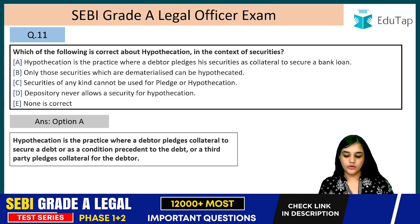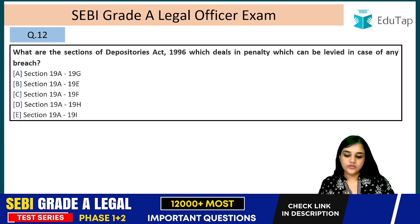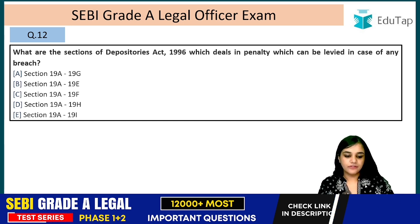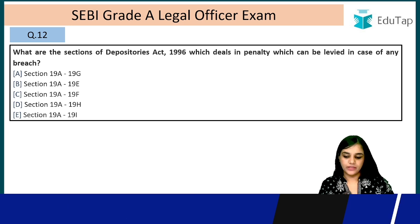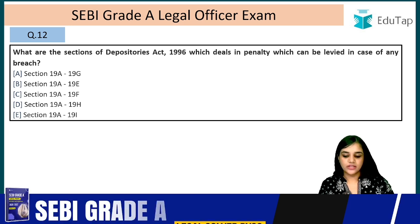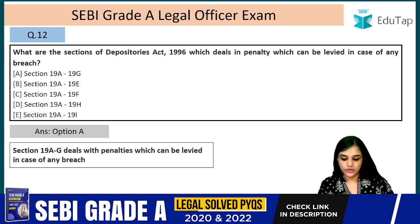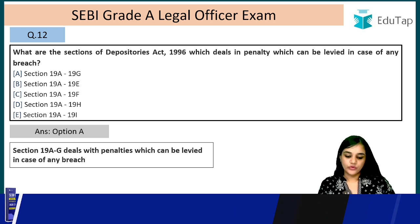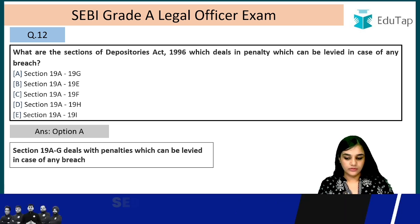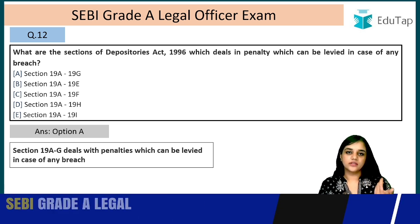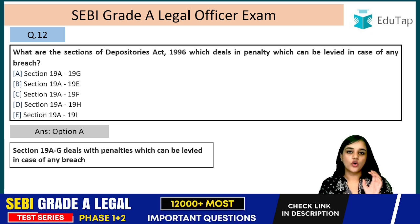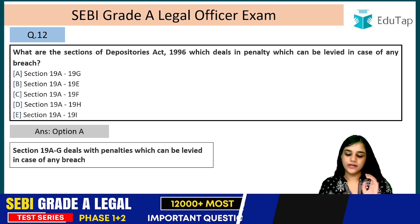Question 12: What are the sections of the Depositories Act 1996 which deal with penalties that can be levied in case of any breach? The answer is sections 19A to 19G. These sections cover different circumstances and scenarios according to which the penalty is decided.